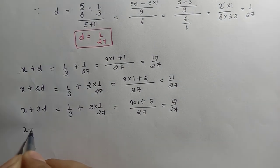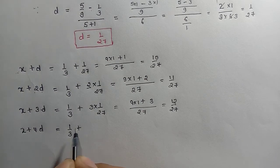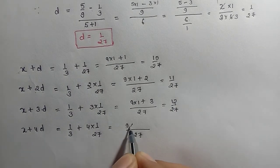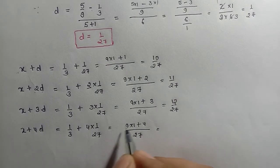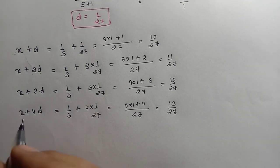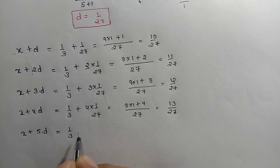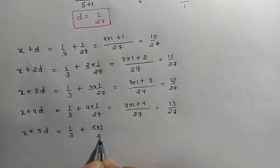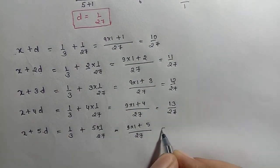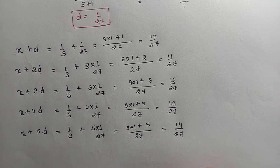Fourth rational number के लिए x + 4D करेंगे। x की value है 1/3 plus 4 × (1/27)। LCM 27: 9 × 1 = 9, plus 4 = 13. So fourth rational number = 13/27। Fifth rational number के लिए x + 5D: 1/3 plus 5 × (1/27)। LCM 27: 9 + 5 = 14. So fifth rational number = 14/27।